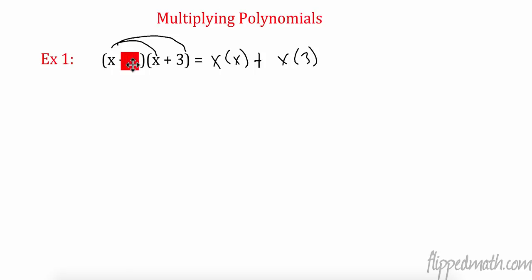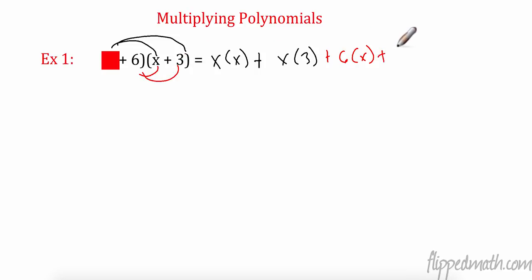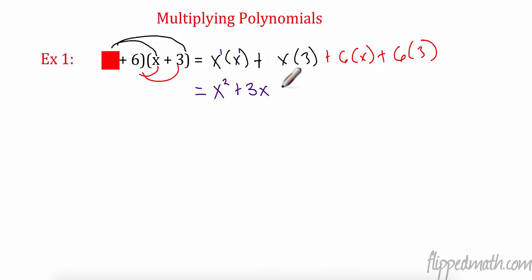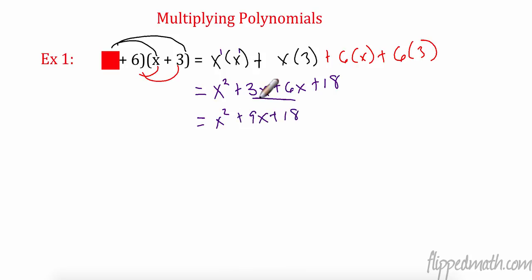We're going to double distribute — I have two things in this binomial, so I'm going to multiply twice. Now I do the 6: 6 times x, and 6 times 3. Then we simplify. When multiplying the same base, I add the exponents, so that's x squared, plus 3x, plus 6x, plus 18. Last, I look for like terms: 3x and 6x is 9x, giving us x squared + 9x + 18.